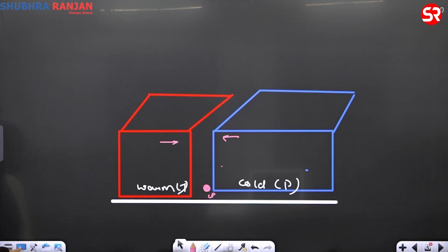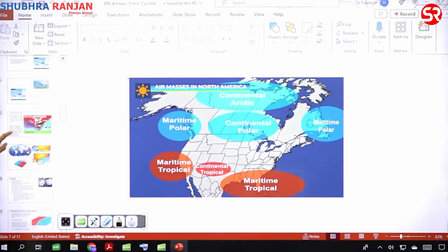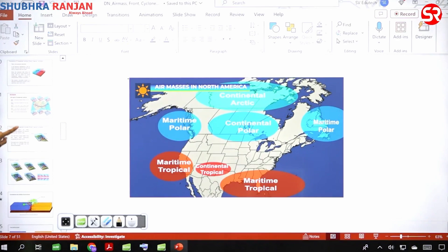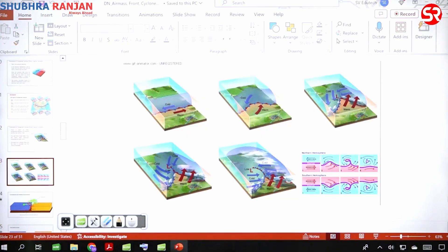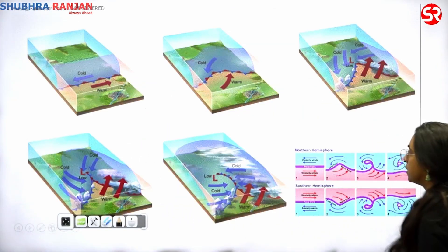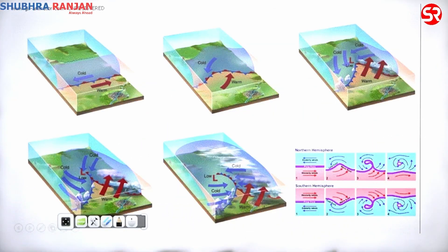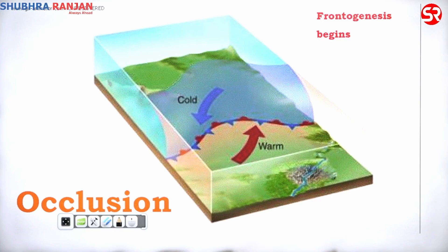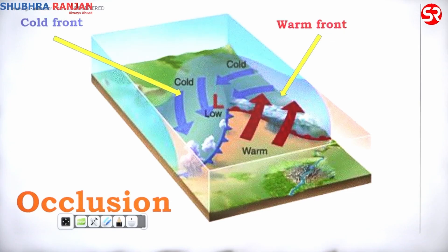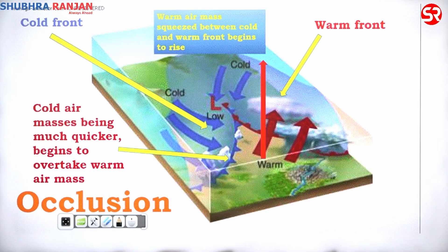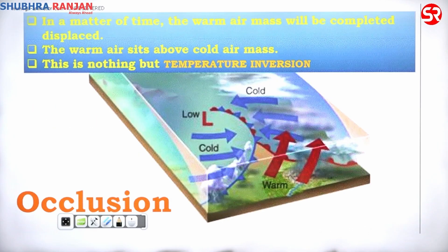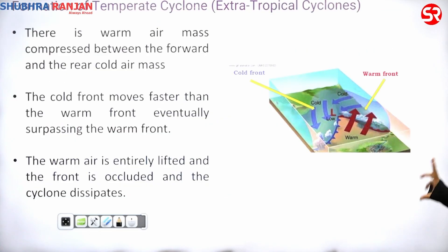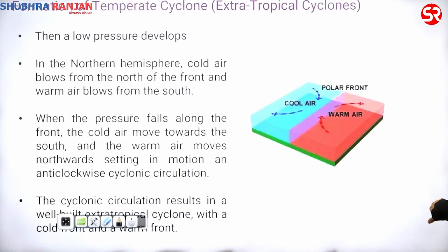Now looking at this GIF — pay attention. Can you see a warm air mass and a cold air mass, both stationed? Now can you see the warm air mass has moved into the cold air mass territory? Can you see the warm air mass is rising up, and clouds are getting formed? The warm air mass is going up, so its base at ground level is shrinking, the horizontal base is moving upward.